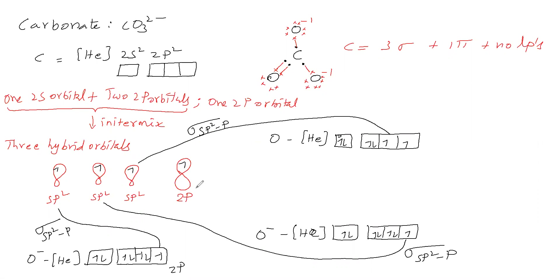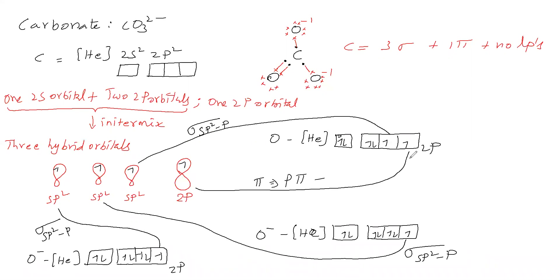The 2p orbital of carbon and the 2p orbital of oxygen undergo lateral overlapping to give a pi bond. This pi bond is formed by the p orbital of carbon and p orbital of oxygen, so it is called a p-pi–p-pi bond.